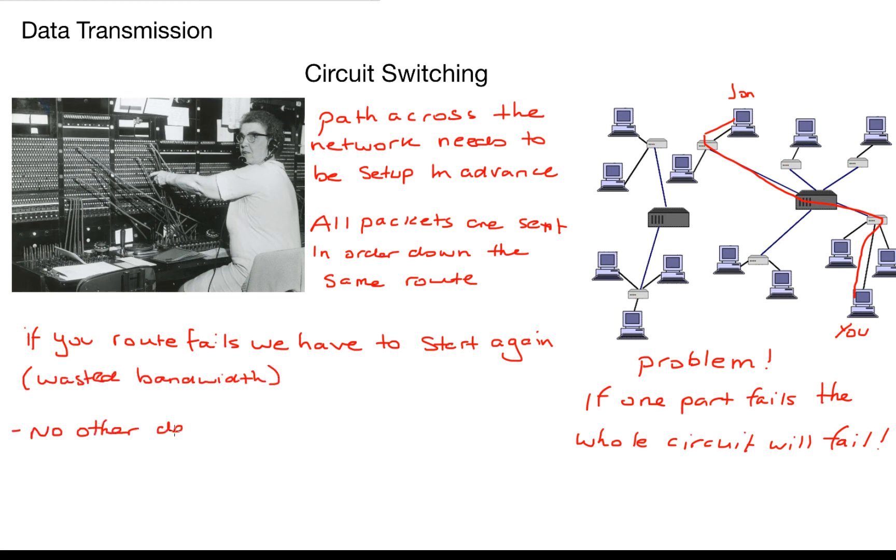The major problem with circuit switching is that if the route fails we have to start again and that wastes bandwidth and no other device can access our circuit while we are in transmission and that's the reason we get an engaged dial tone when someone else is using the phone.